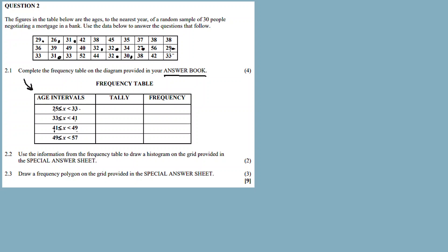Note that 33 is not less than 33, so it does not count. Counting all the valid values: 1, 2, 3, 4, 5, 6, 7, 8, 9, 10. So the frequency for that first age group is 10.